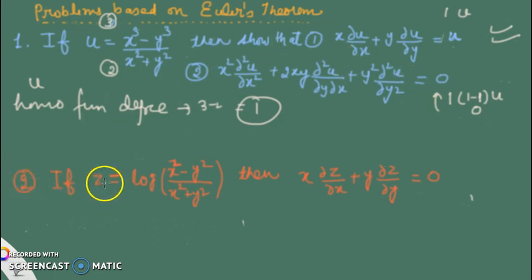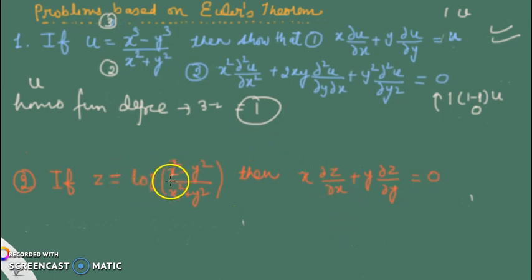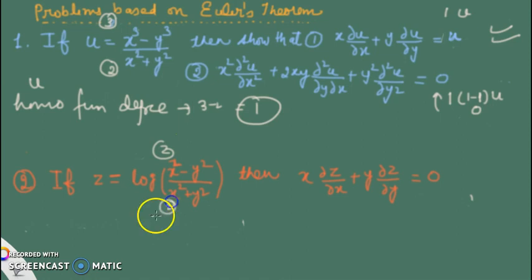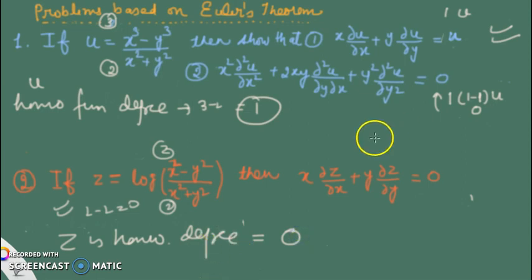In the second example, z = log((x² - y²)/(x² + y²)), and we have to show that the expression equals 0. The degree of the numerator is 2 and the degree of the denominator is also 2, so 2 minus 2 equals 0. Thus z is a homogeneous function of degree 0, and by Euler's theorem the result is 0 times z, which equals 0.